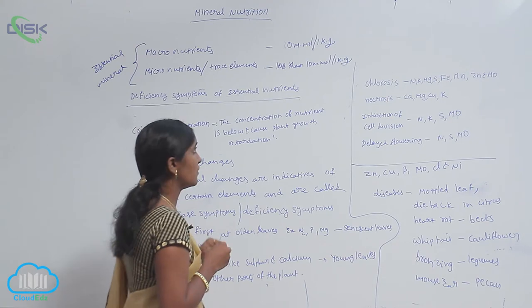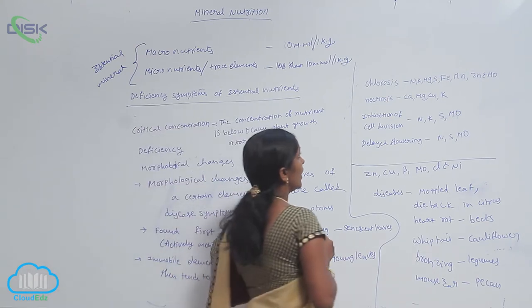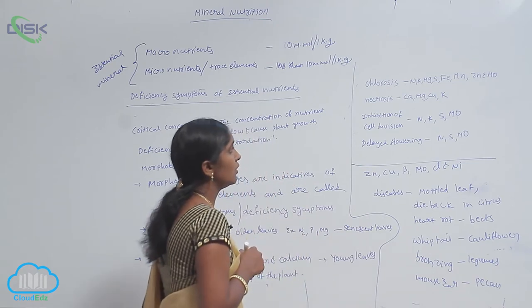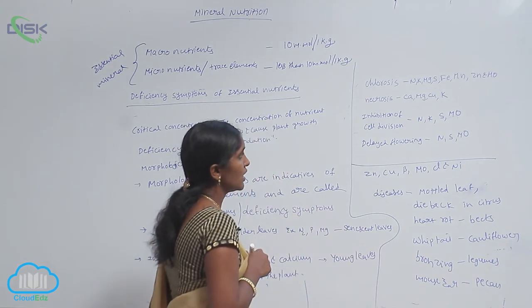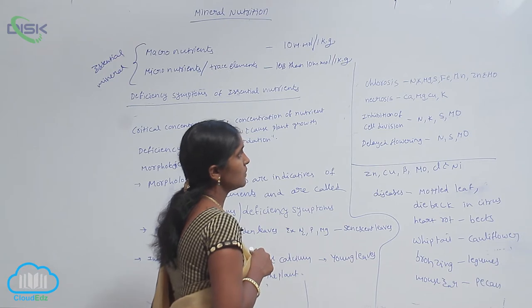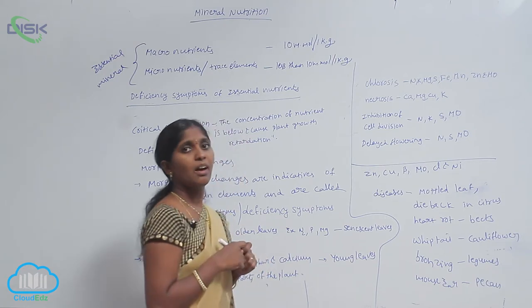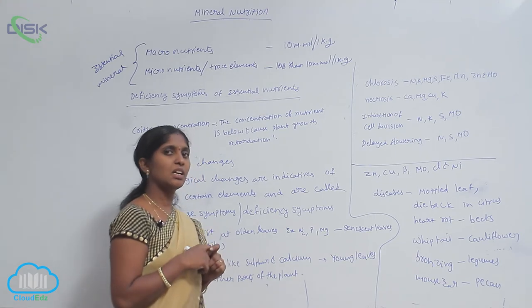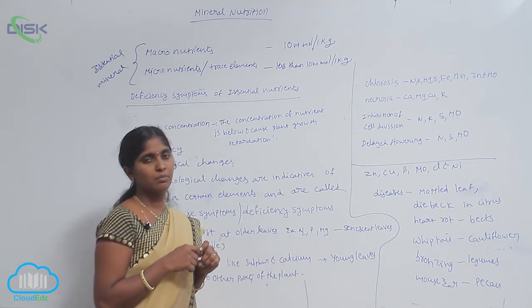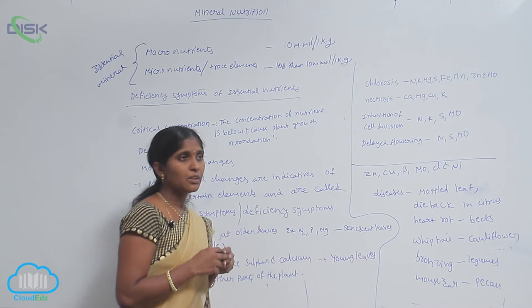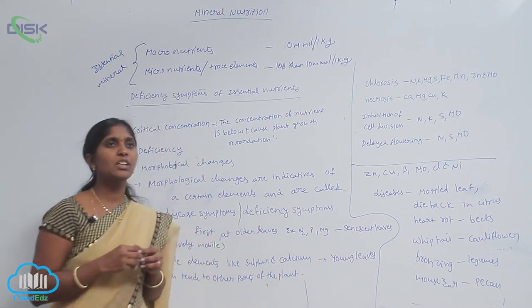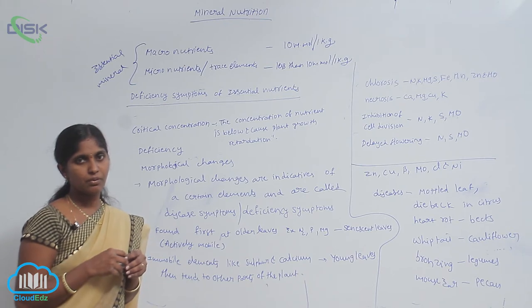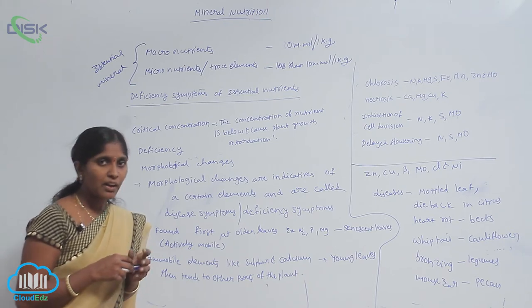The chlorosis is caused due to the deficiency of nitrogen, potassium, magnesium, sulfur, iron, manganese, zinc, and molybdenum. So the determination of deficient nutrient becomes very tough.